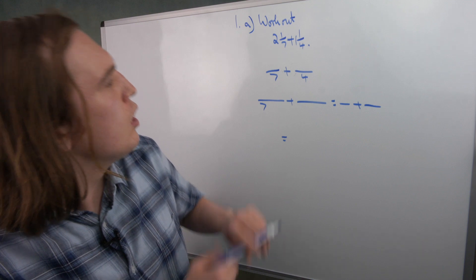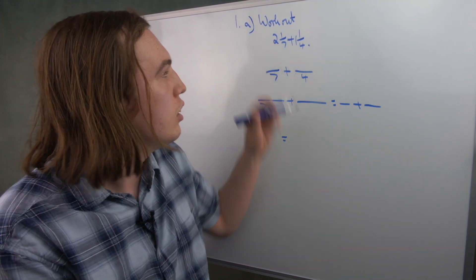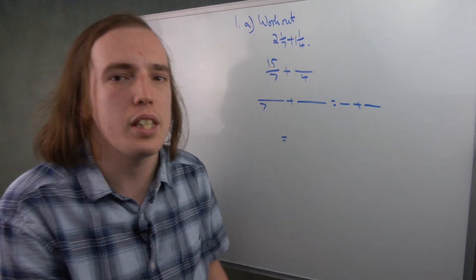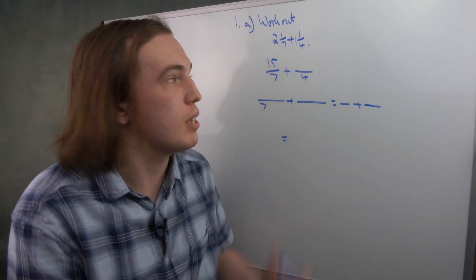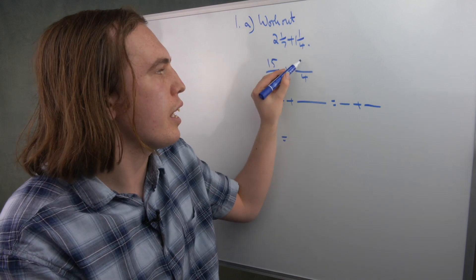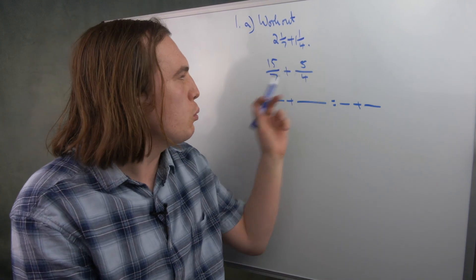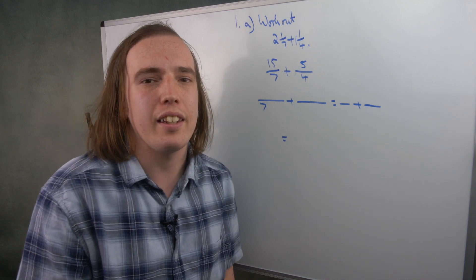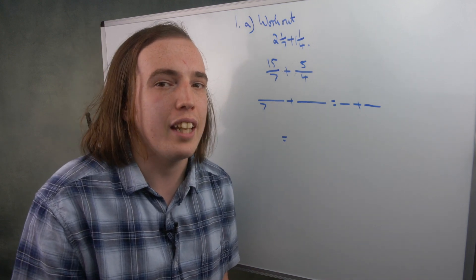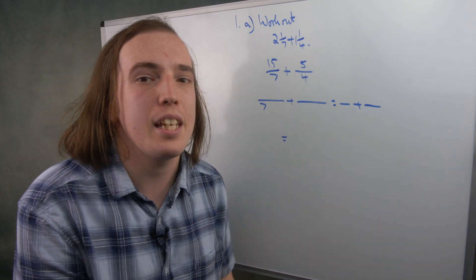So how do we do this? Well, 2 times 7 gives us 14. Add the 1 that was already there, it becomes 15 over 7. Same for the other one: 1 times 4 is 4, add the 1 that was already there, that's now 5 over 4. In order to add these fractions together, we need something called a common denominator — that is, the two numbers on the bottom are going to be the same as each other.